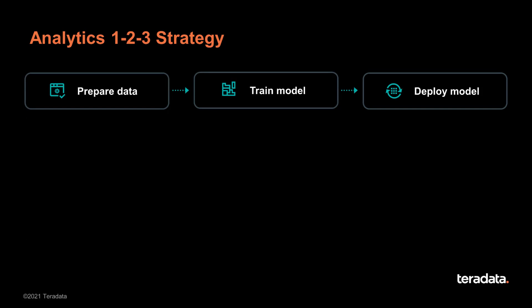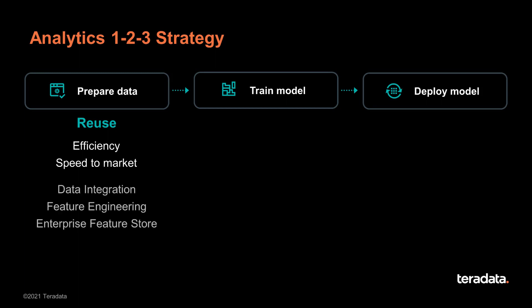Looking again at the Analytics 1-2-3 strategy across its three sections: data preparation gives you reuse of data, delivering efficiency and a much quicker speed to market for new data products and models. What's involved in this first pillar is data integration, feature engineering, and the building of an enterprise feature store. Teradata brings extensive experience with large enterprises here, and the technical details are explained in later videos.